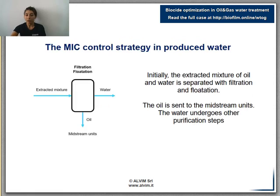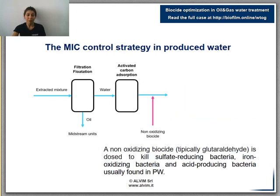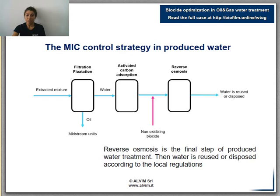MIC occurs also in produced water — the mixture of extracted water with oil and gas. The first step is filtration, where oil runs to midstream facilities while water must be managed. Through an activated carbon absorption step, dissolved contaminants are removed from the water. A non-oxidizing biocide is then added to eliminate bacteria, whose presence can lead to corrosion, fouling, and sulfide release. The water treatment ends with reverse osmosis to further purify the water, which can now be reused.